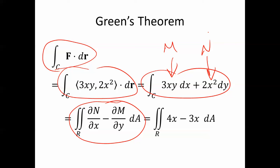Partial N partial x, that's going to be 4x, and partial M partial y, that's going to be 3x.